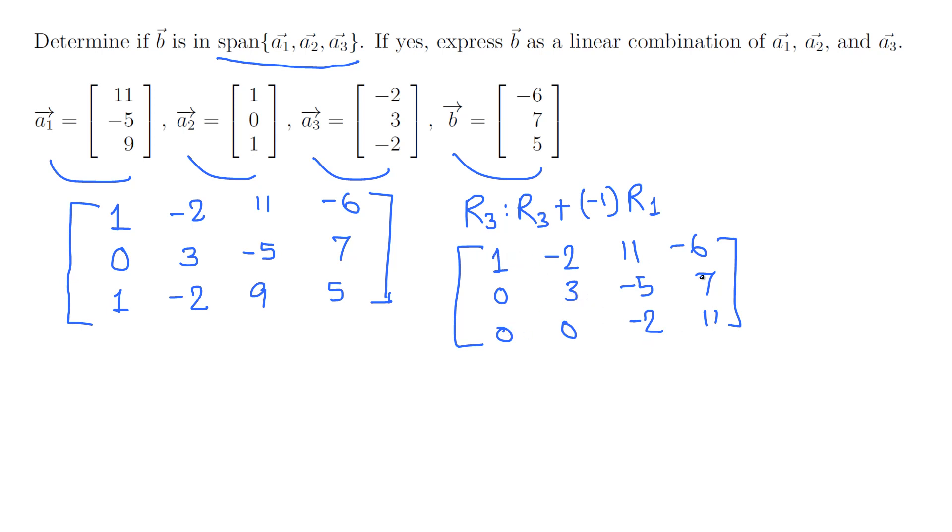There is no pivot in the last column. That means yes, B can be written as a linear combination of these three vectors. That means yes, B is in the span of this. So the answer is yes.